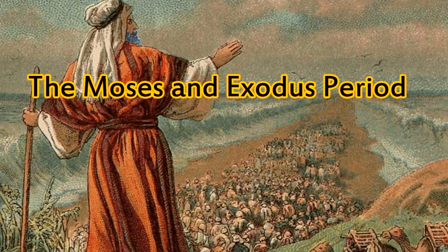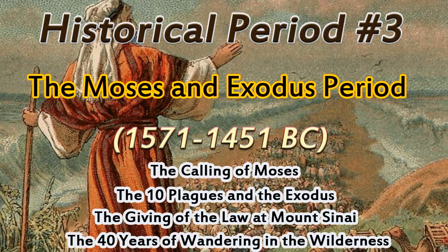Historical period number three, the Moses and Exodus period, 1571 to 1451 BC. The main events of the period of Moses — Exodus, Numbers, and Deuteronomy — were number one, the calling of Moses, when the Hebrews were in the land of Egypt. The Pharaoh had ordered the death of all Hebrew male babies because they were growing so rapidly. Moses was born and grew up in the house of Pharaoh. Later, he developed a yearning to seek after the Hebrew God, whom he met at a burning bush. Moses later returned to free the Hebrew slaves.